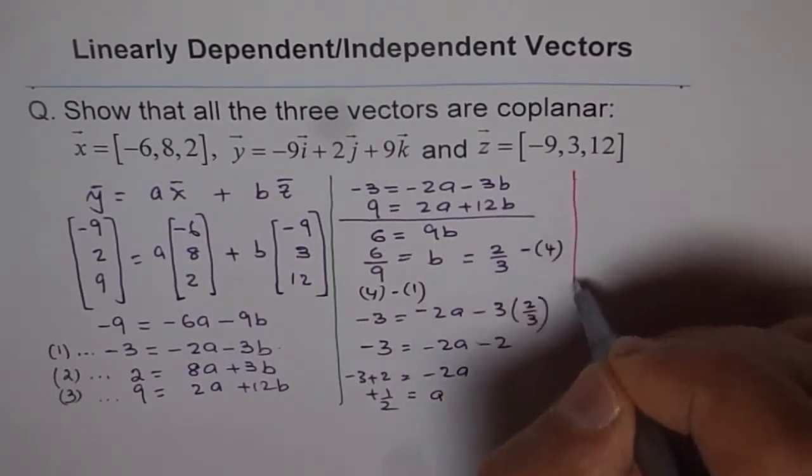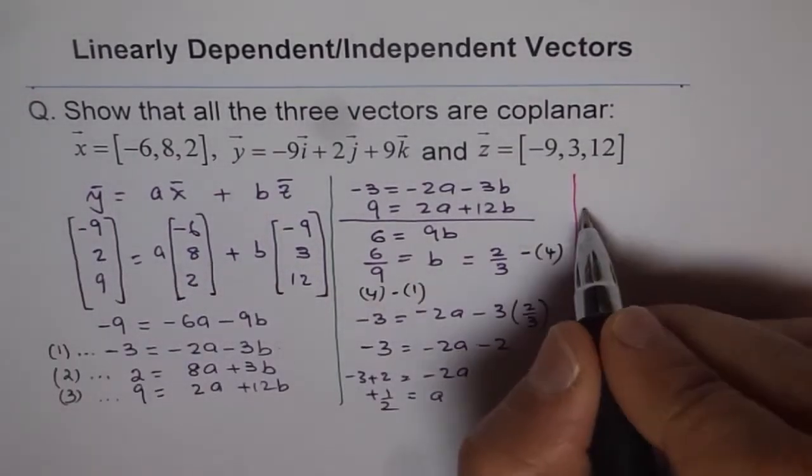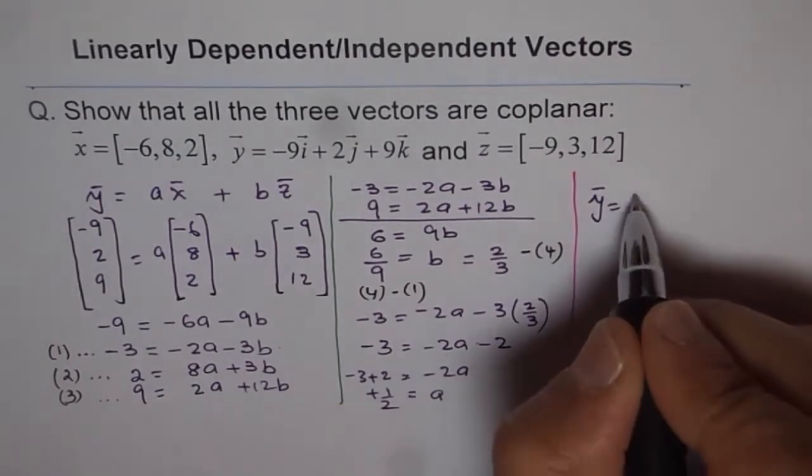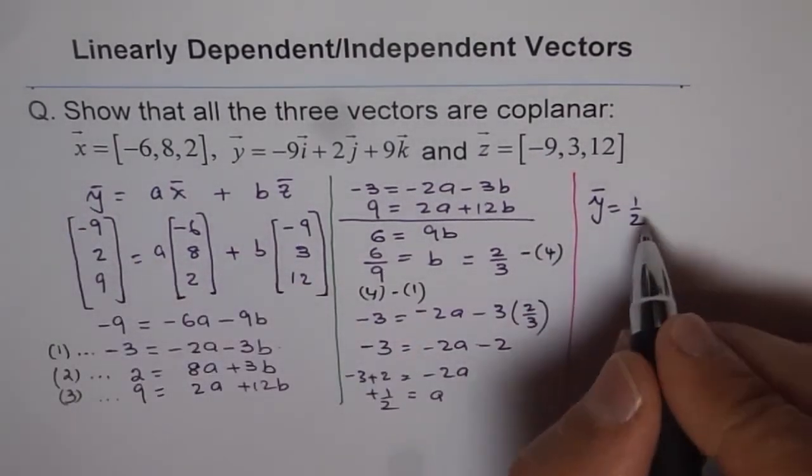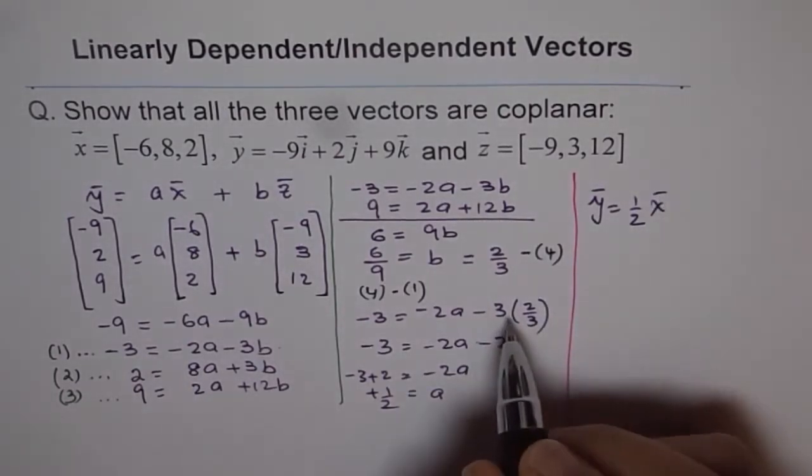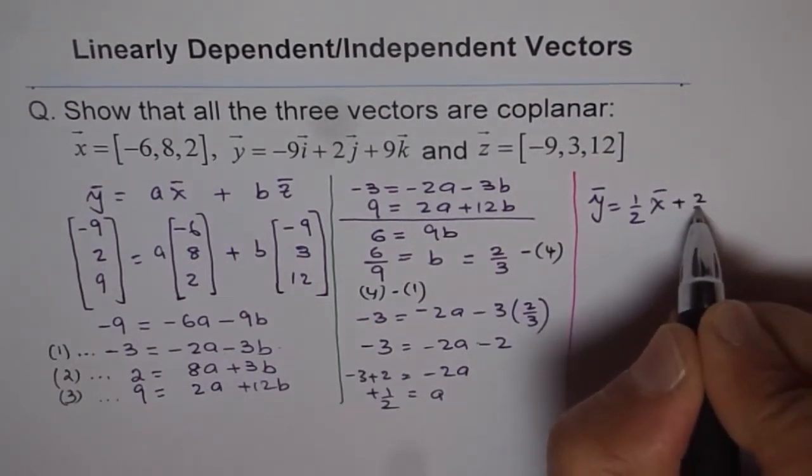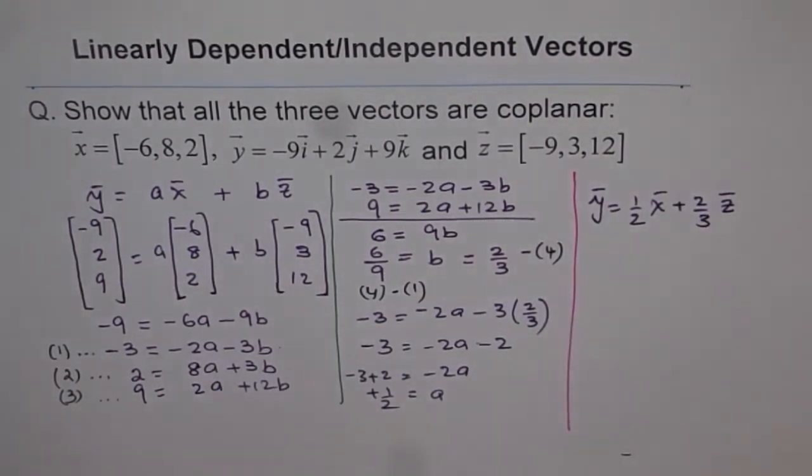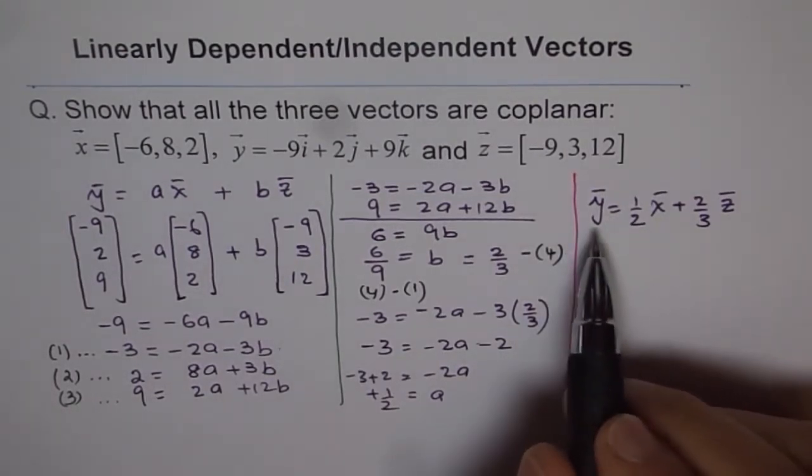And therefore, I can write down my solution that y, y here is equals to, the vector y equals to half of a, I mean a is half, half of x. And the b value was 2 over 3. So we write plus 2 over 3 of z.